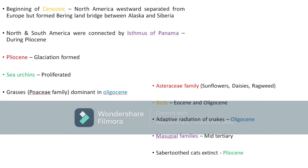During the Pliocene — the last epoch of the Tertiary — glaciation formed the latest ice ages. Sea urchins, important in developmental biology, proliferated during the Cenozoic. Grasses of the Poaceae family dominated during the Oligocene — we will see grass and mammal co-evolution in the next topic. The Asteraceae family plants like sunflowers and ragweed formed during the Oligocene. Birds diversified during the Eocene and Oligocene, having already emerged in the Mesozoic.